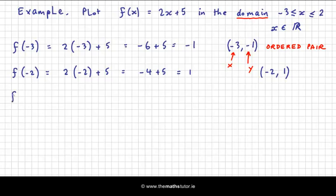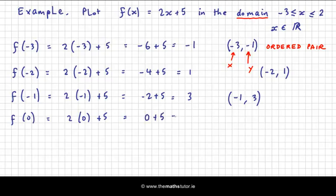If we keep going, f of minus 1 is 2 times minus 1 plus 5, which is minus 2 plus 5, which is 3. And so minus 1, when I put it in, gives me 3. f of 0 is 2 times 0 plus 5. Now any number multiplied by 0 is 0, so I just get 5. So 0 is mapped onto 5.